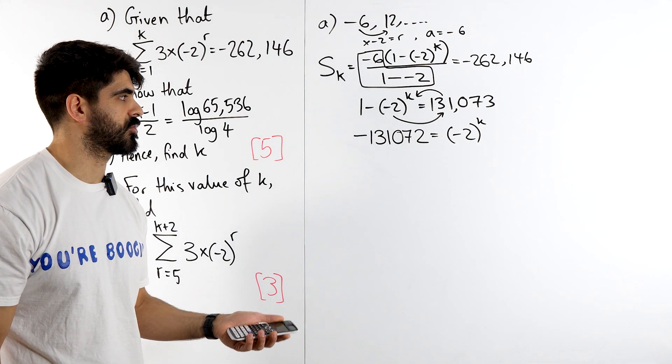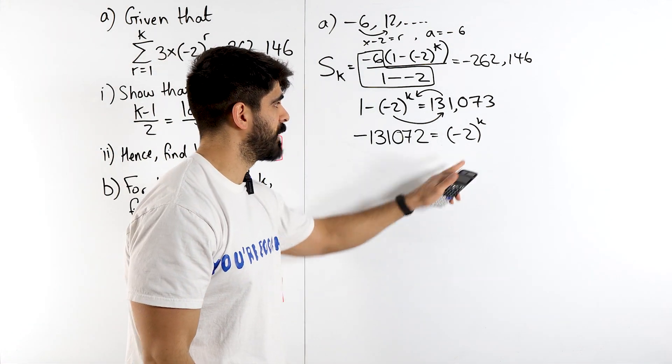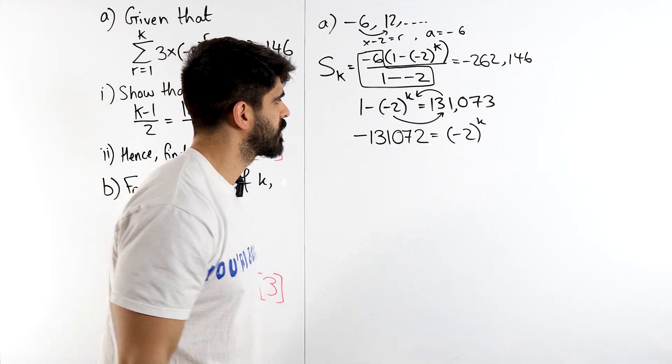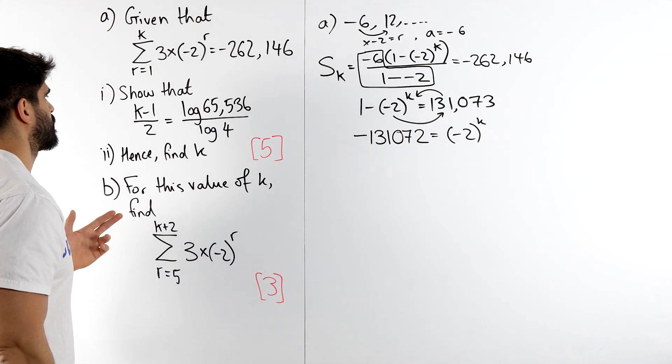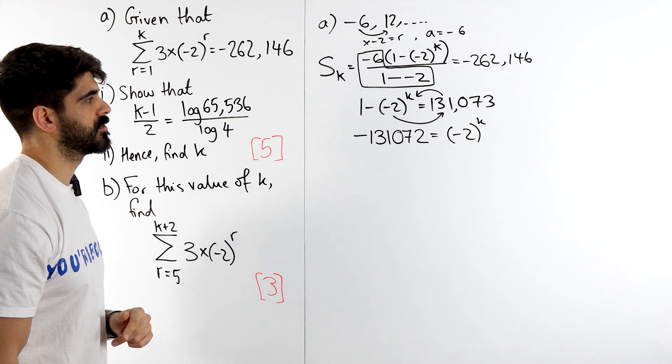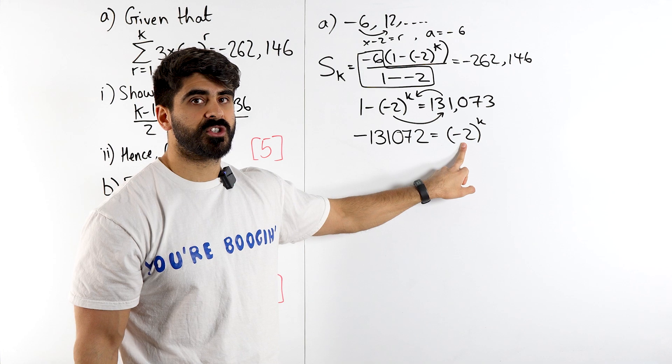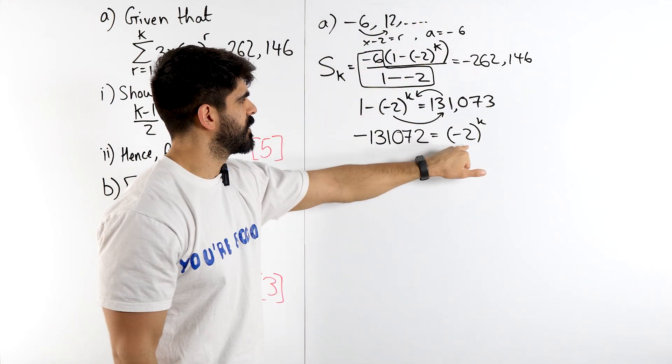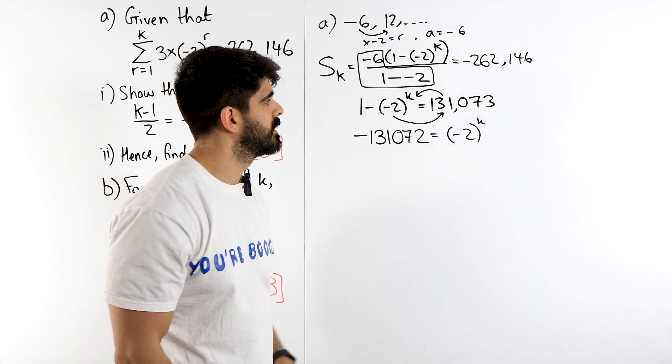Now from here what we want to do is take logs, right? Now the problem with that is we can't do log of base numbers being negative, because if we take logs of both sides you're going to have log of a negative and then you're also going to have log of a negative. It's not looking good. Now what does that imply to us? This implies to us that k must be odd. Why? Because if we don't think of it in terms of logs, the powers of minus 2 are going to go negative, positive, negative, positive, etc.